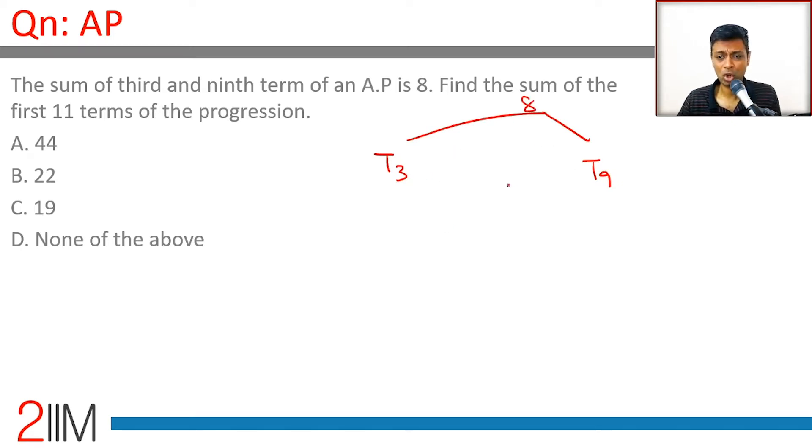Six times common difference we are adding. Usually, whenever you are dealing with AP or GP, working with middle term does wonders. The middle term here is T6.